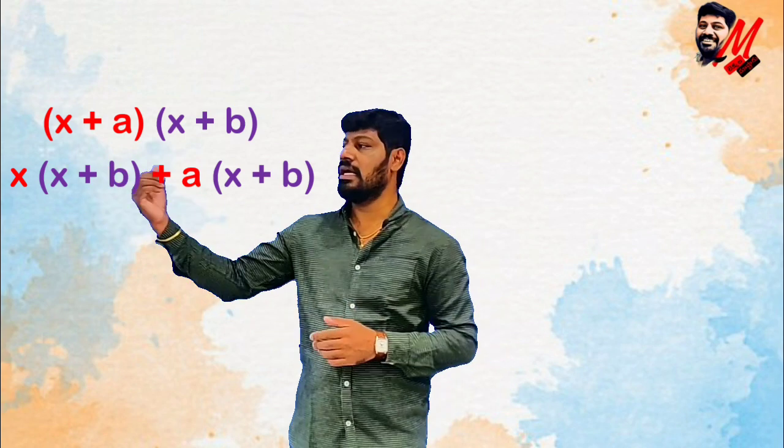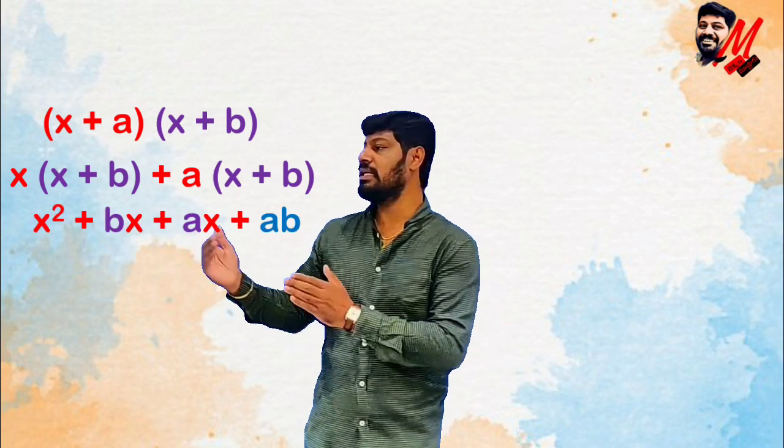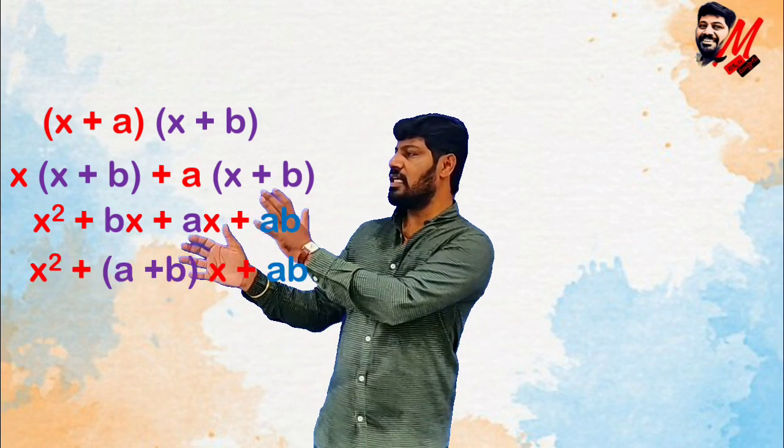Just have a look: x plus a into x plus b. If we expand these two brackets using normal algebraic multiplication, we have x plus a multiplied by x plus b. This gives x into x plus b, plus a into x plus b, which equals x square plus bx plus ax plus ab. So we will follow normal multiplication to derive the formula for x plus a into x plus b.